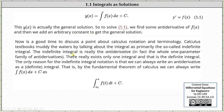Now is a good time to discuss a point about calculus notation and terminology. Calculus textbooks muddy the waters by talking about the integral as primarily the so-called indefinite integral. The indefinite integral is really the anti-derivative — in fact, the whole one-parameter family of anti-derivatives. There really exists only one integral, and that is the definite integral.